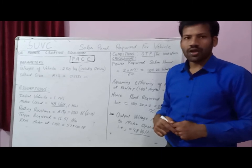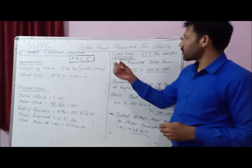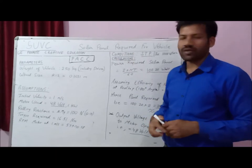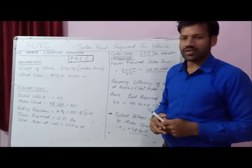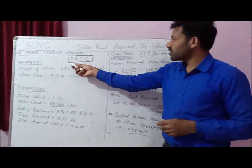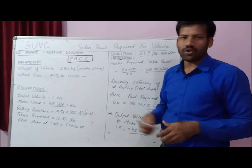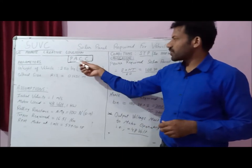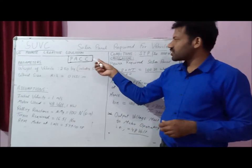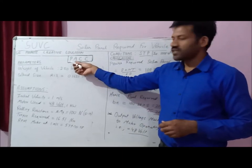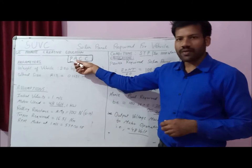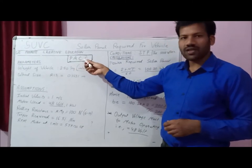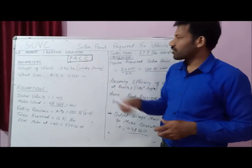I am demonstrating the power required for the solar panel in four simple steps — the PACC model. The four steps are: P stands for Parameters, A for Assumptions, C for Conditions, and C for Calculations.